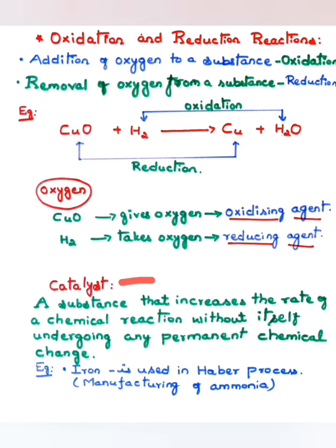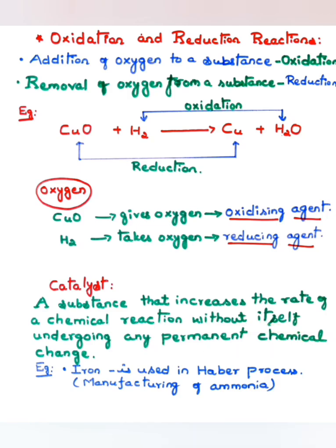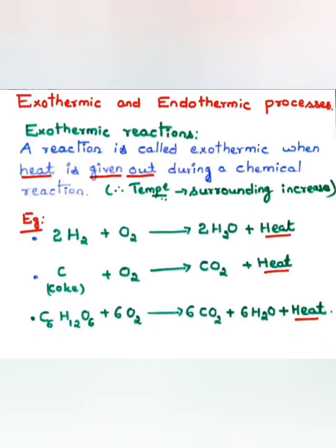A catalyst is a substance that increases the rate of a chemical reaction without itself undergoing permanent chemical change. For example, iron is used as a catalyst in the Haber process for the manufacturing of ammonia.